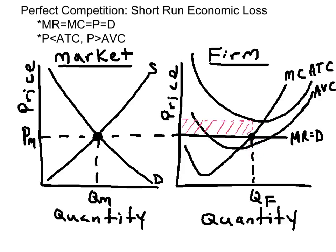The per-unit economic loss is the difference between the ATC and the MR equals MC point. When you multiply by quantity, you get the area of this rectangle, which represents the short-run economic loss.